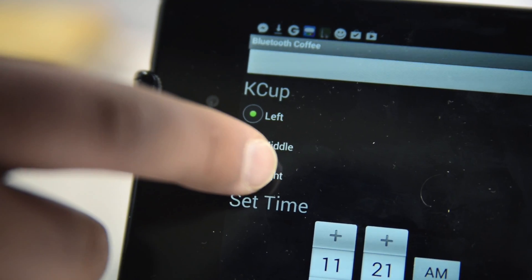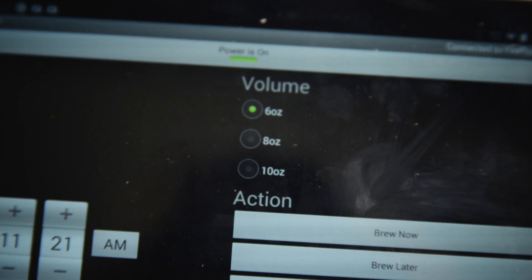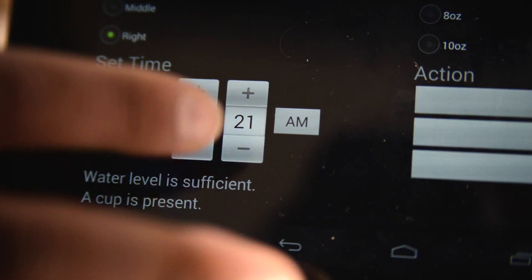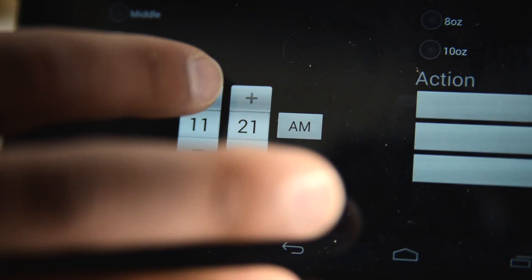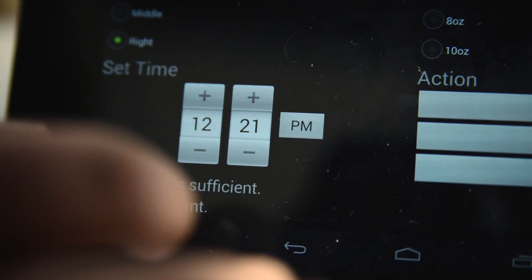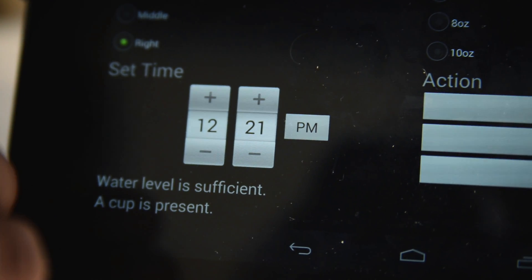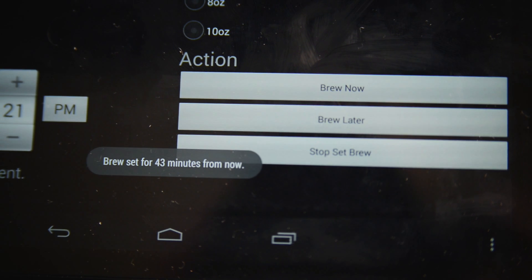We're going to select the right K-cup. We're going to keep the volume at six ounces. We can set the time. We want to brew a cup at 12:21 p.m. Then we would hit brew later and it would brew at that time.